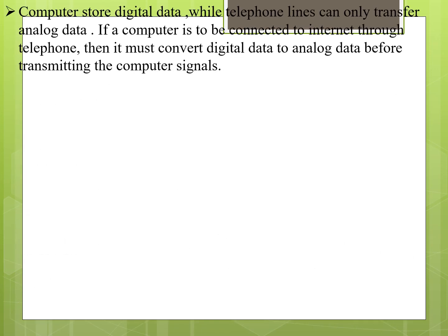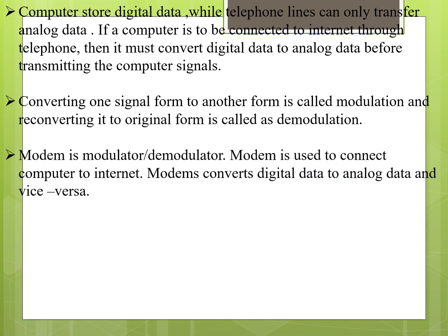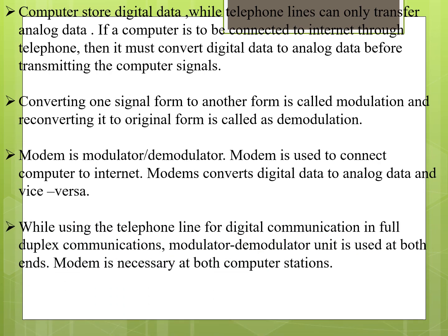The new technique to overcome these difficulties is the modem. Computer stores digital data while telephone lines can only transfer analog data. If a computer is to be connected to the internet through a telephone, it must first convert digital data to analog before transferring. Converting one signal form to another is called modulation, and reconverting it to the original form is called demodulation. Modem converts digital data to analog and vice versa.